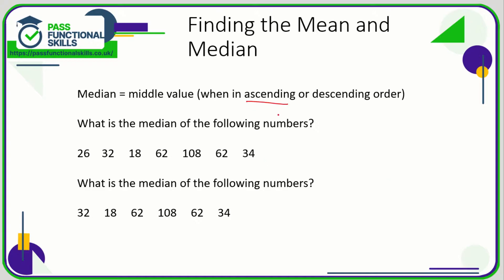So the median of this set of numbers, well let's put them in order. So lowest first: 18, 26, 32, 34, 62, 62, 108. Let's find the middle number.